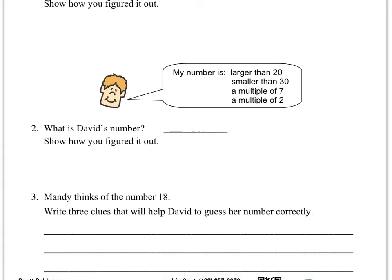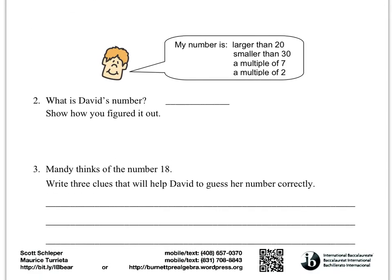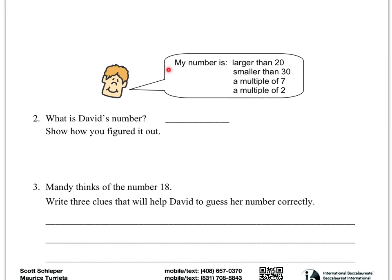And then we look down here, David. My number is larger than 20, but smaller than 30. So it's in between 20 and 30, so it's either 21 all the way up to 29. And it should be a multiple of 7 and a multiple of 2. So I would do the same thing, list the multiples of 7 that are between 20 and 30, and then list the multiples of 2 that exist between 20 and 30. And there should only be one that matches, and that should be David's number.